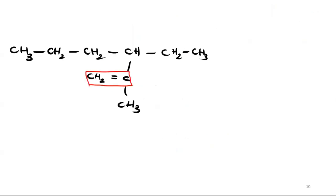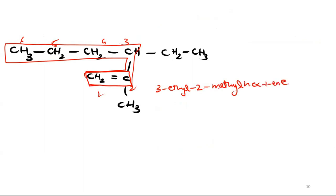This must be included in the longest carbon chain. Like this. 1, 2, 3, 4, 5, 6. So this becomes 3-ethyl, 2-methyl, hex-1-ene.